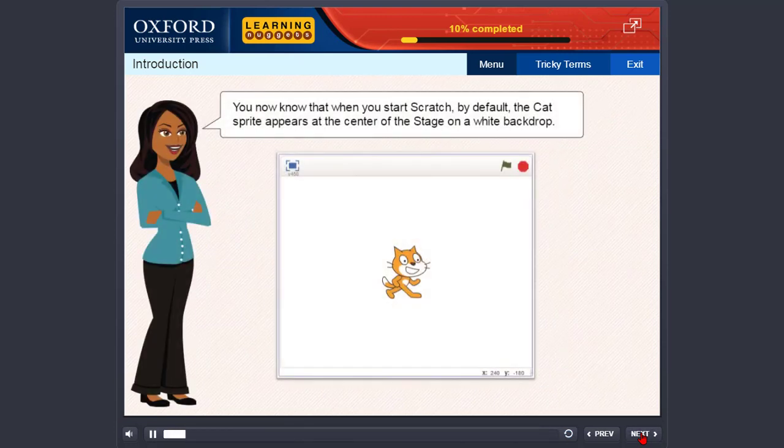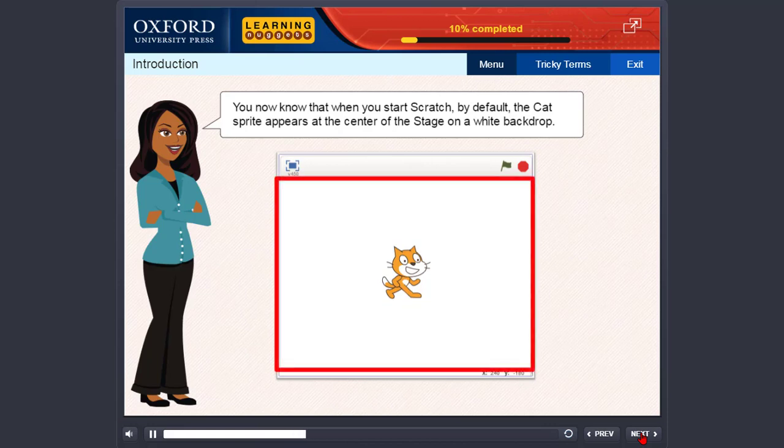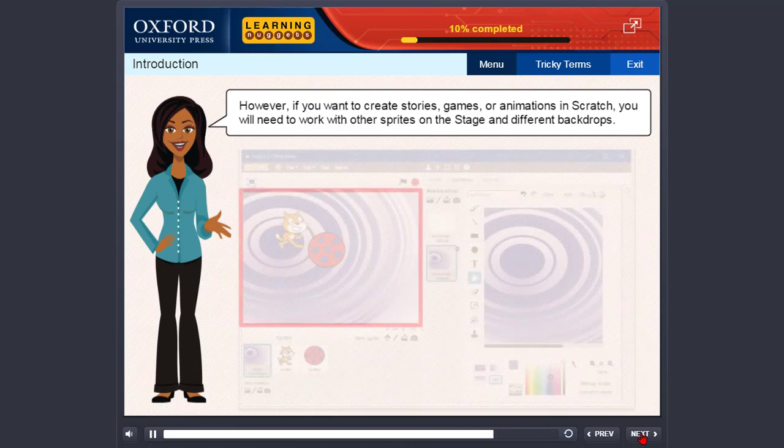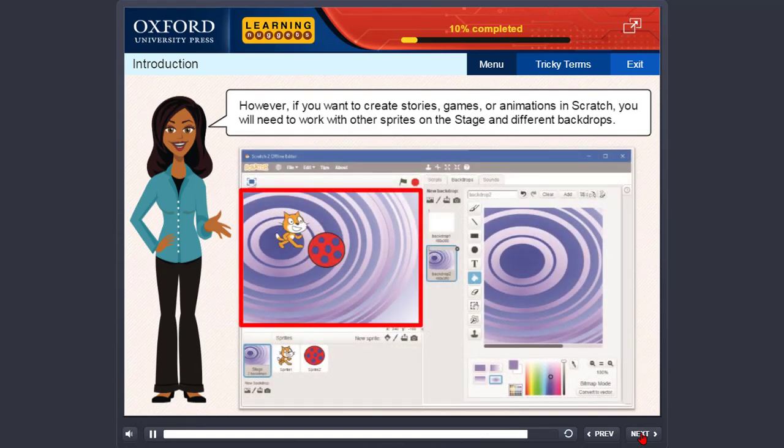You now know that when you start Scratch, by default the cat sprite appears at the center of the stage on a white backdrop. However, if you want to create stories, games or animations in Scratch, you will need to work with other sprites on the stage and different backdrops.